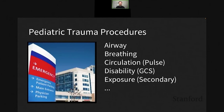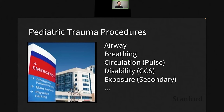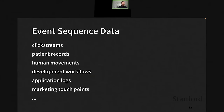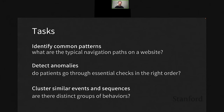Event sequence data are also pervasive in many other domains. For example, when a patient comes to a hospital they go through checkups. Here's a dataset from a pediatric trauma unit where patients go through so-called ABCDE events — airway, breathing, circulation, etc. Doctors are interested in finding hidden patterns inside these records: is the procedure strictly followed, are there deviations from expected procedures? We also have human movements, development workflows, application log data, and digital marketing touchpoints.